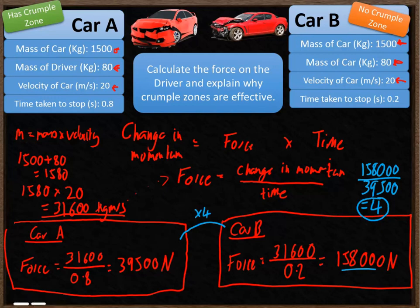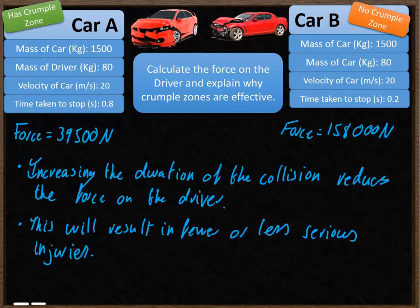Next part of the question is to just explain why that's a good thing and why the crumple zones are effective. So to summarize, car A, the driver experiences a force of 35,500 newtons. Car B forces much greater, 4 times larger, 158,000 newtons.